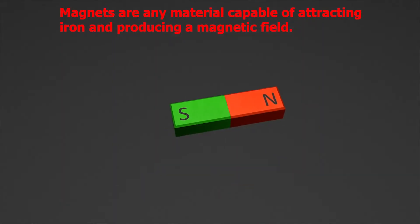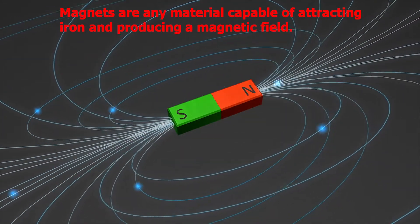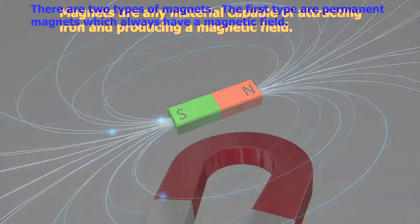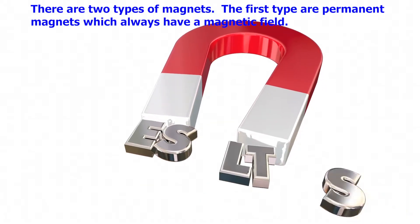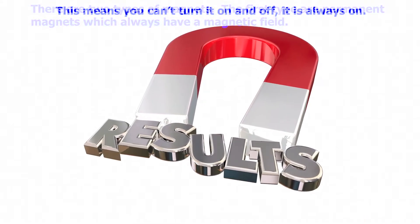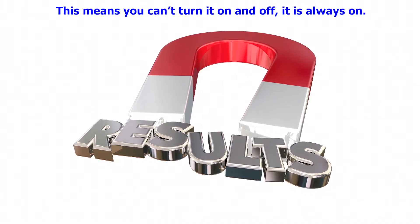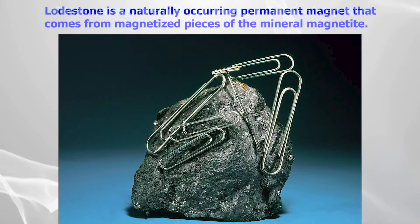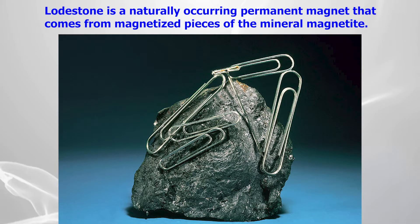Magnets are any material capable of attracting iron and producing a magnetic field. There are two types of magnets. The first type are permanent magnets, which always have a magnetic field — you can't turn it on and off, it is always on. Lodestone is a naturally occurring permanent magnet that comes from magnetized pieces of mineral magnetite.